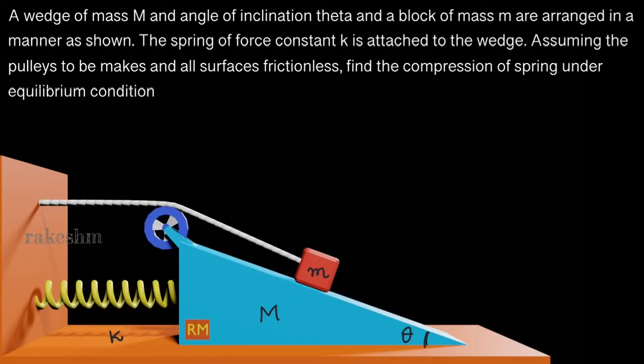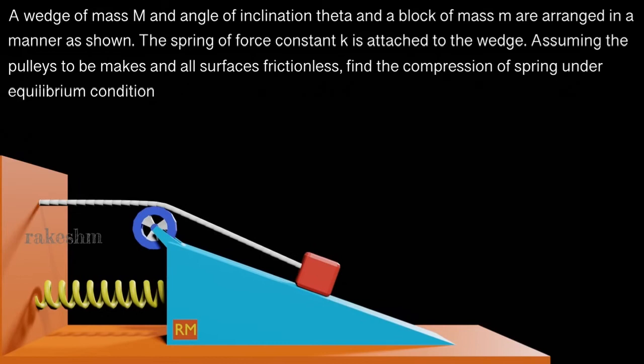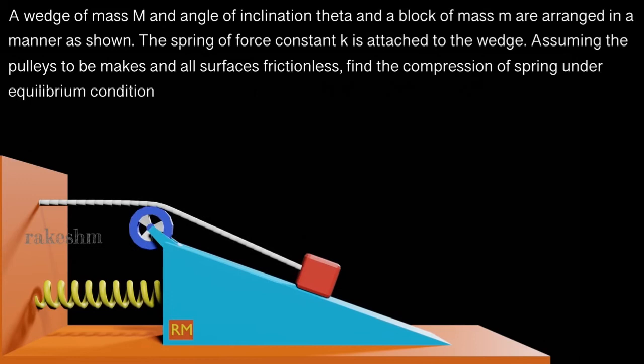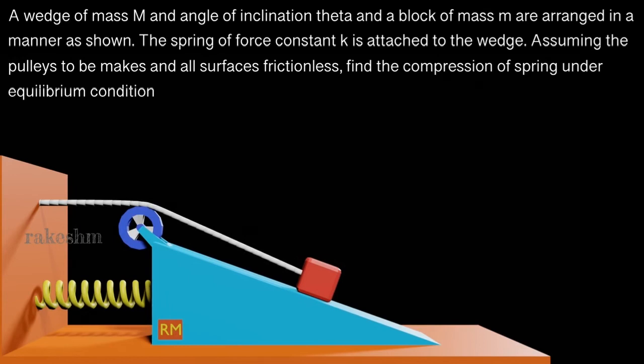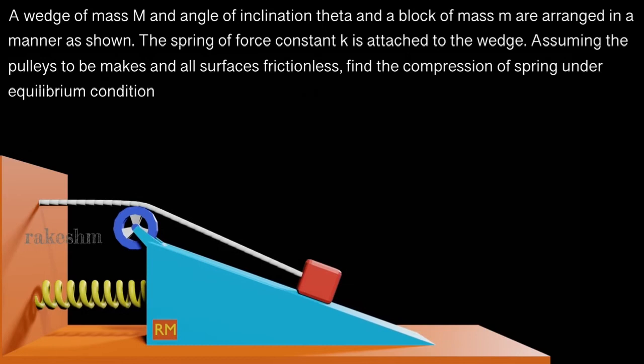Find the compression of spring under equilibrium condition. In the diagram shown here, the spring that you see is in a relaxed state. Let us release the system and see how this system moves. You can see that this block pushes the wedge and the wedge starts moving towards left and the spring also pushes the wedge in this direction.